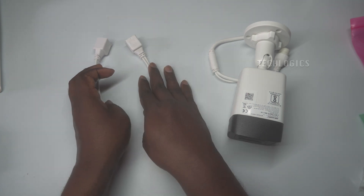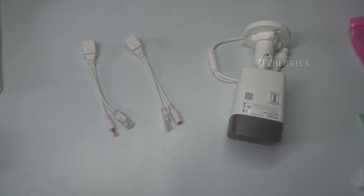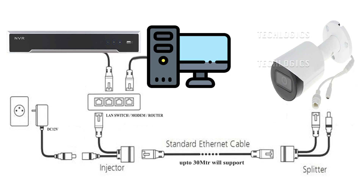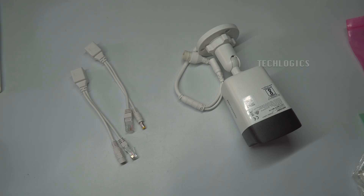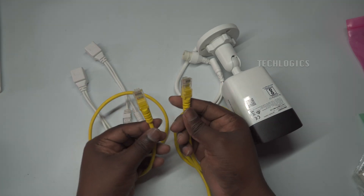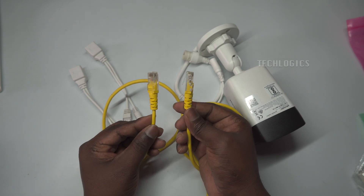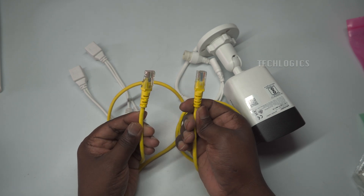The PoE splitter package includes one PoE injector cable and one PoE splitter cable. These components work together to provide both power and data to your IP camera through a single Ethernet cable, making your installation process easier and more efficient.